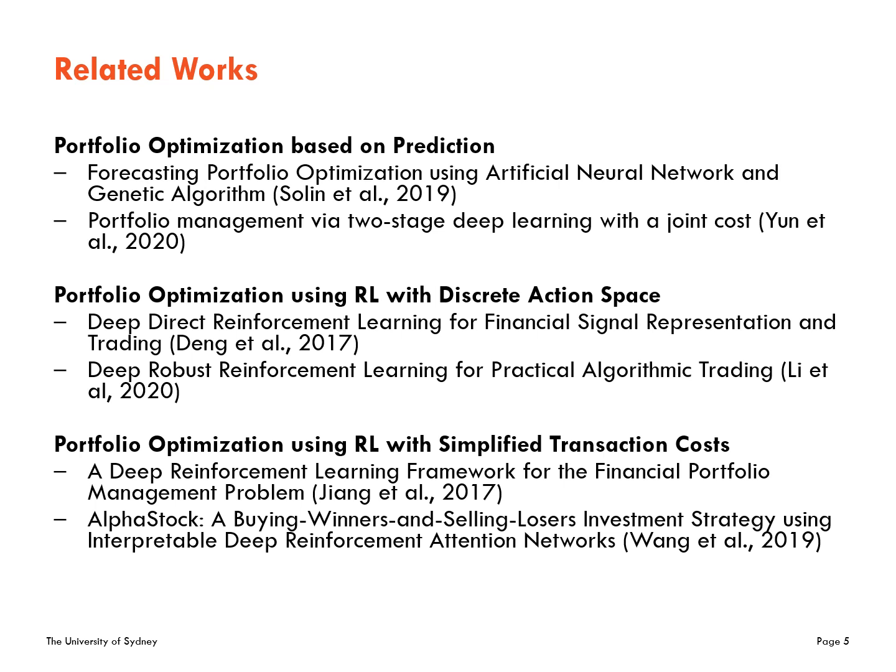There are previous studies regarding portfolio optimization, and they can be categorized into three groups. Some optimize portfolios based on the prediction of asset price, but minimizing the prediction loss is not always the same as optimizing a portfolio, which requires sequential decision-making with complex constraints. Another group works with reinforcement learning but with discrete action space — meaning buy, hold, or sell a specific number of assets — which has a limitation in representing all possible combinations of assets.